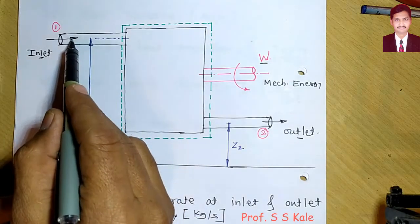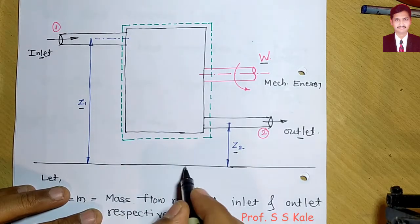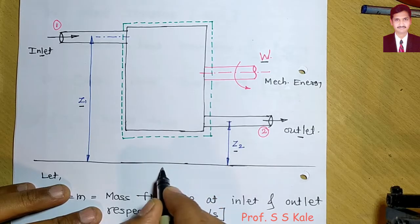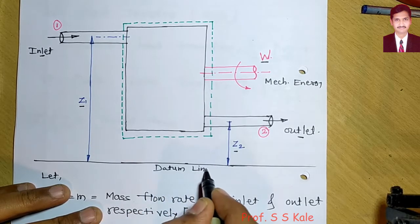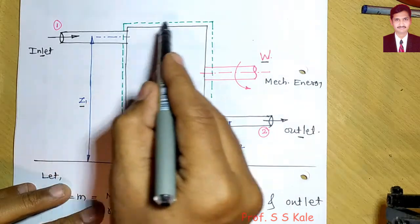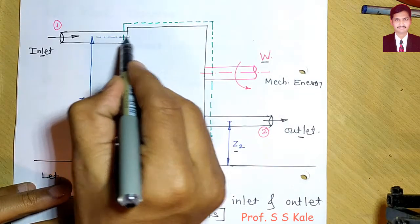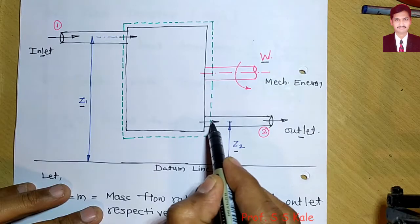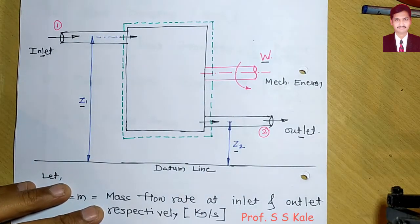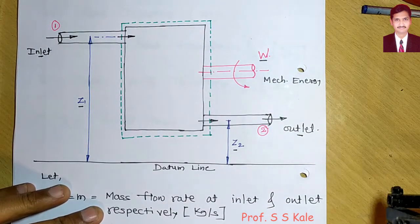At the inlet, the height of the pipeline is z1, and at the outlet it is z2, both measured from the datum line — the baseline. The dotted line shows the control volume or system. Fluid enters the control volume and exits from it, and for this system we will derive the steady flow energy equation.